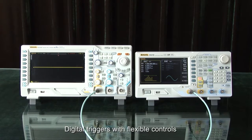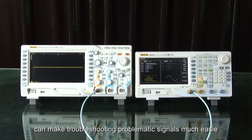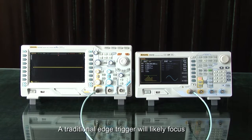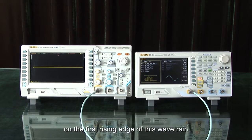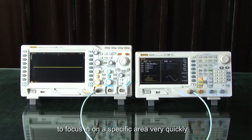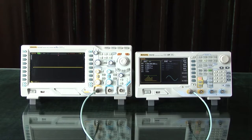Digital triggers with flexible controls can make troubleshooting problematic signals much easier. Here is a pulsed wavetrain with varying amplitudes. A traditional edge trigger will likely focus on the first rising edge of this wavetrain, but we can use the window trigger to focus in on a specific area very quickly.